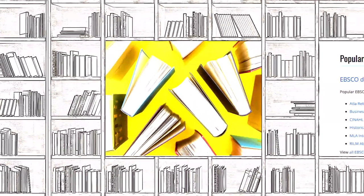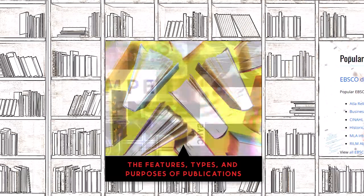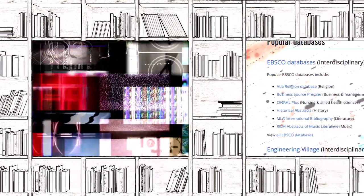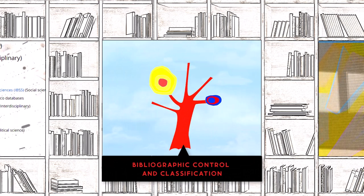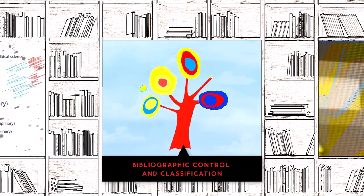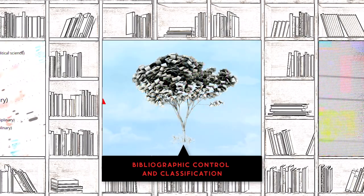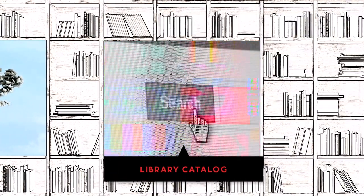Turning towards the documentary universe, Library and Information Science has expert knowledge of the features, types, and purposes of publications. We understand how to create and care for them in large collections. Bibliographic control is our term for describing the distinguishing properties of each publication and situating it within a classification scheme that makes each publication accessible in a library catalog.